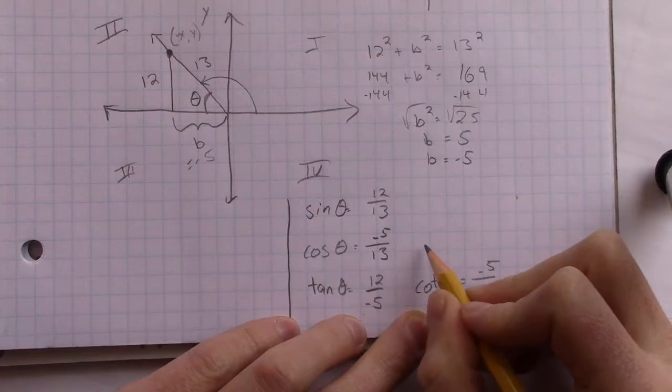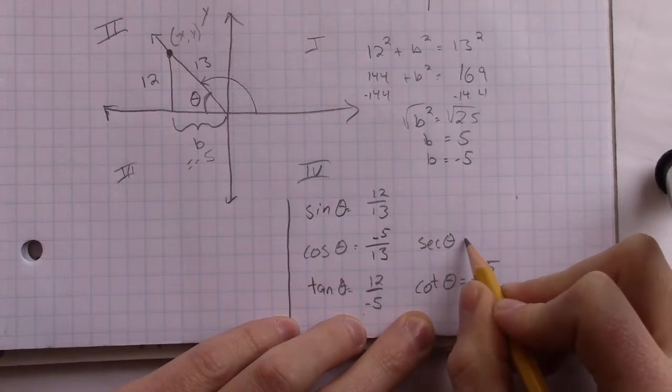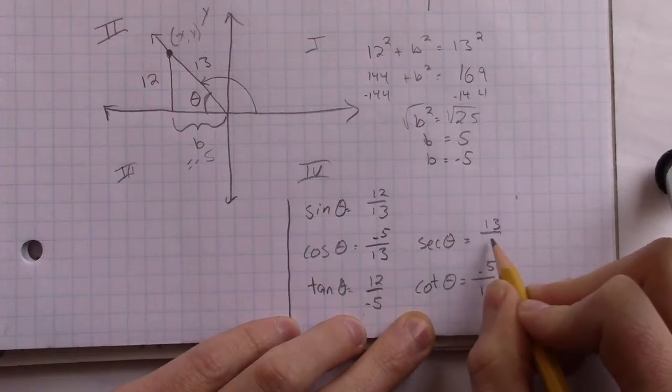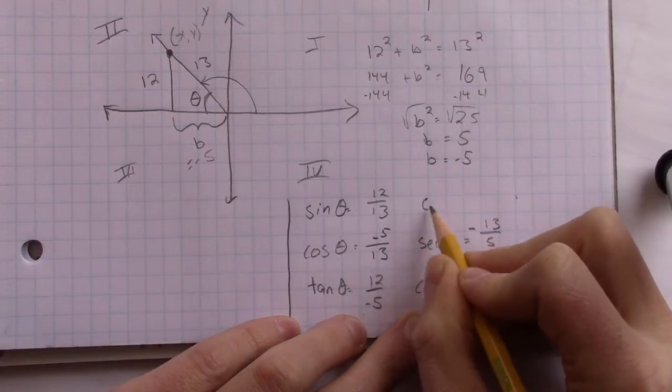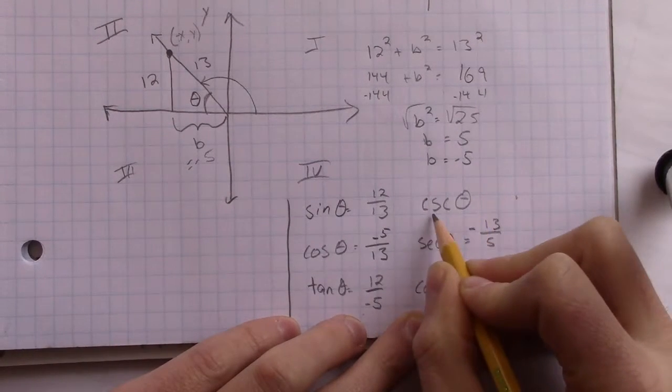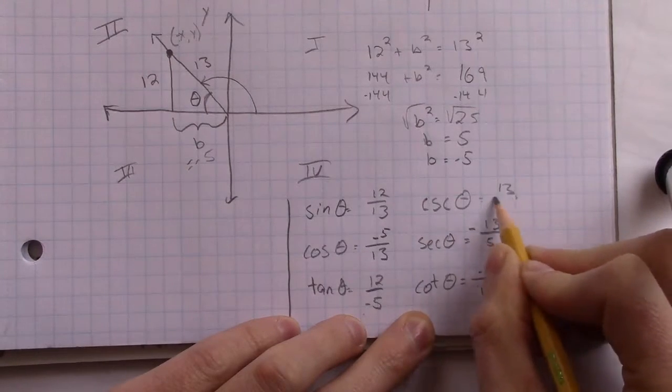Cosine of theta. 1 over cosine of theta is secant of theta. That's secant of theta equals 13 over 5. So I'm going to make sure it's negative still. And then we've got cosecant. Cosecant is CSC. Cosecant of theta equals the reverse. So that's 13 over 12.